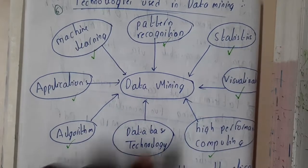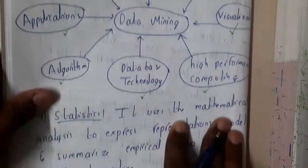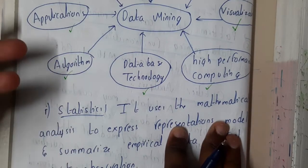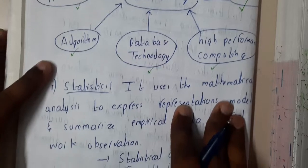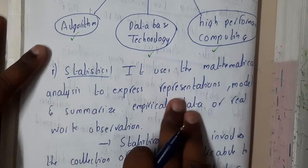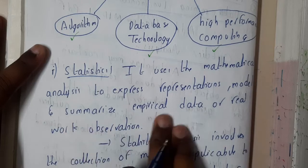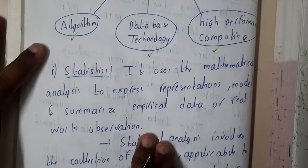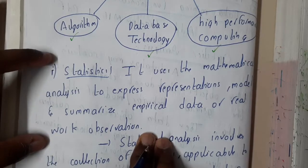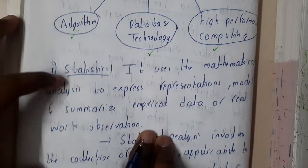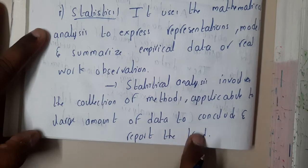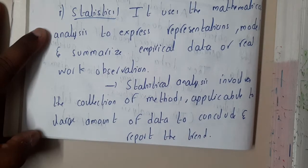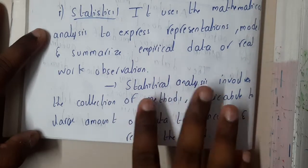The first topic is statistics. Statistics is used to calculate things like mean, mode, and median. It is used in mathematical analysis to express, represent, and summarize empirical data or real-world observations. Statistical analysis involves the collection of data and methods applicable to large amounts of data to conclude and report trends.